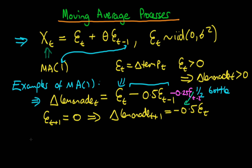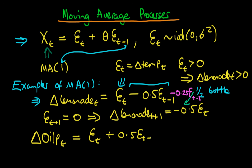The second example involves modeling the change in oil price at time t. The change in oil price at time t equals some error term at time t plus 0.5 times the error in the last period. Note the plus sign here, relative to the lemonade example which had a minus. The error term in this case represents whether a typhoon or hurricane occurs out at sea.